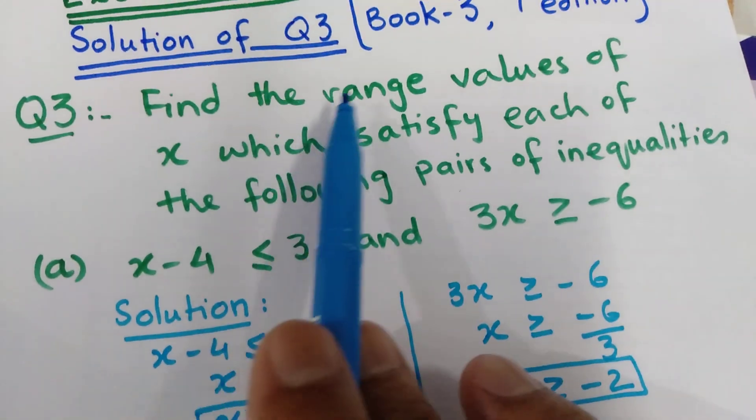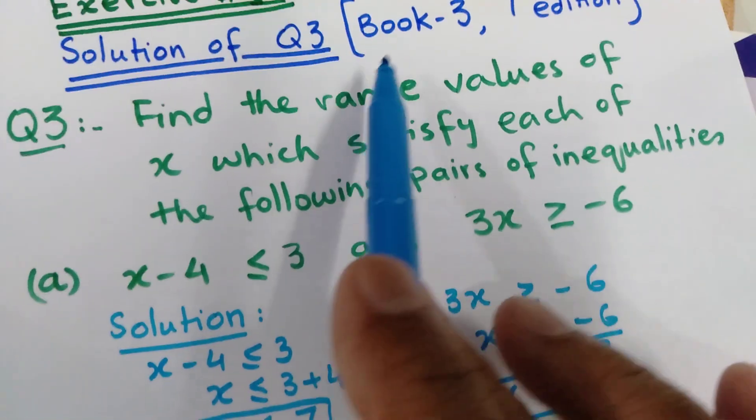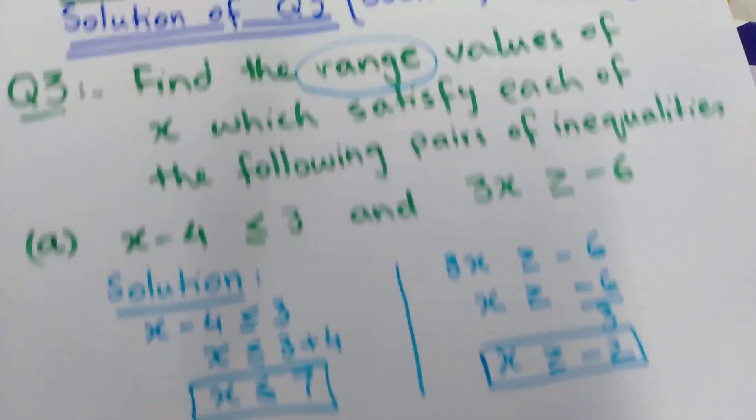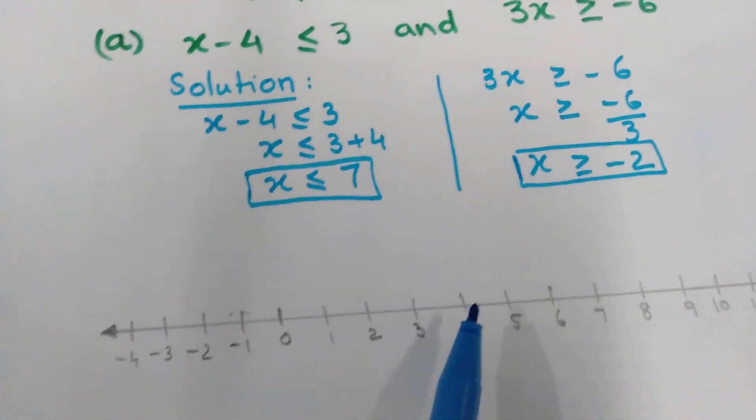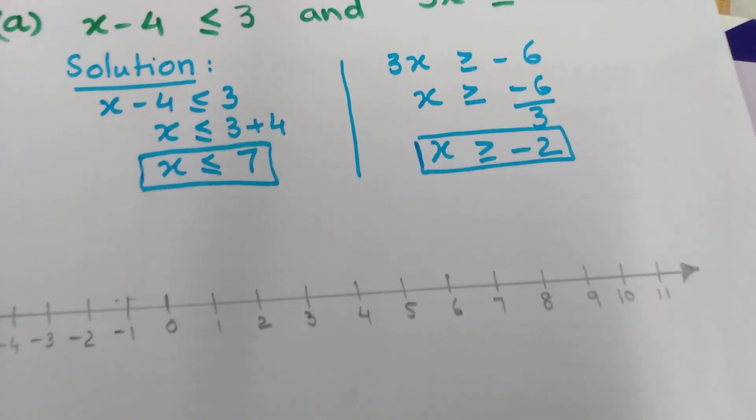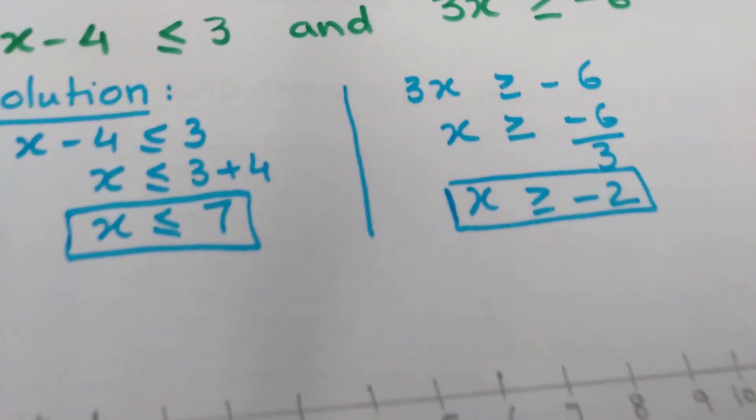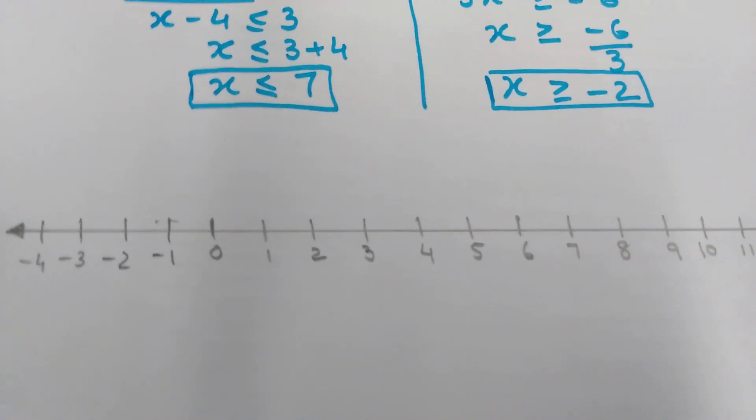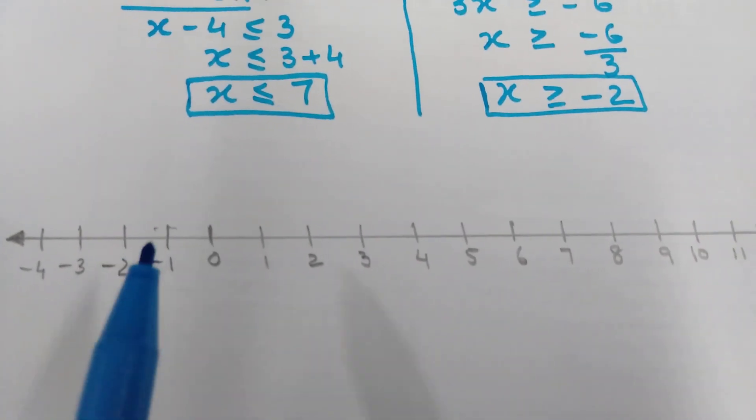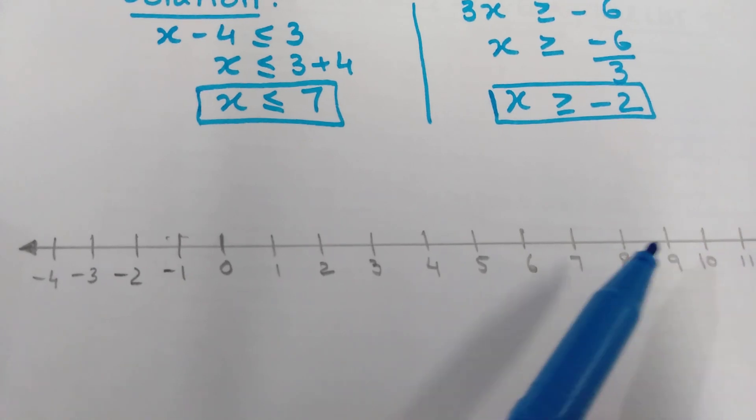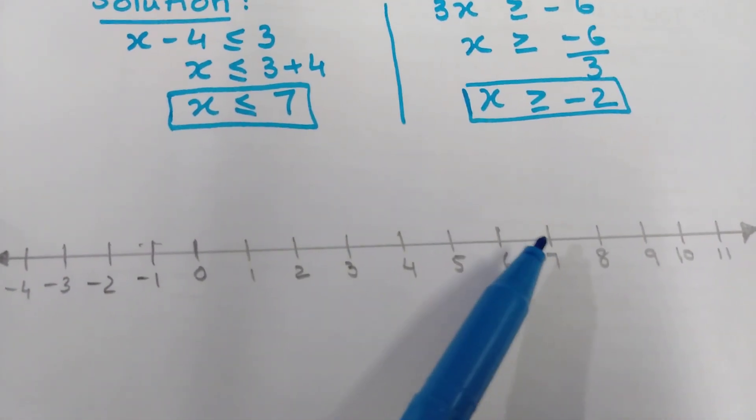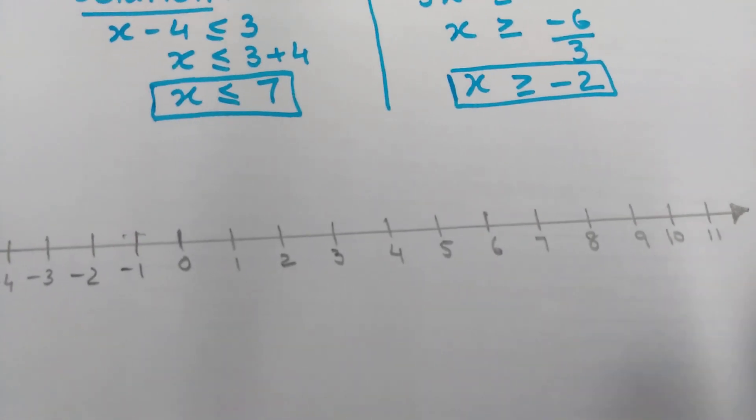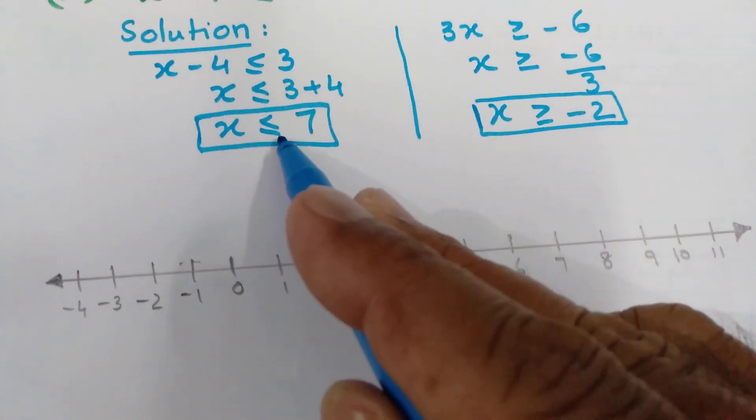To find range values, what will you do? You will draw a number line like this, from minus 2 to positive 7.